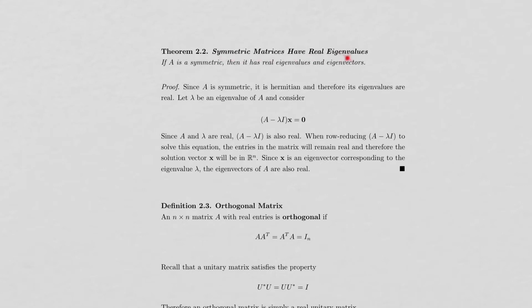Symmetric matrices have real eigenvalues and eigenvectors. If A is symmetric, it is Hermitian, and Hermitian matrices have real eigenvalues (proven in a previous video). For eigenvectors: since both A and eigenvalue λ are real, A − λI is real; row reducing a real matrix produces no complex entries, so the solution vector x is real. Therefore all eigenvectors of A are also real.